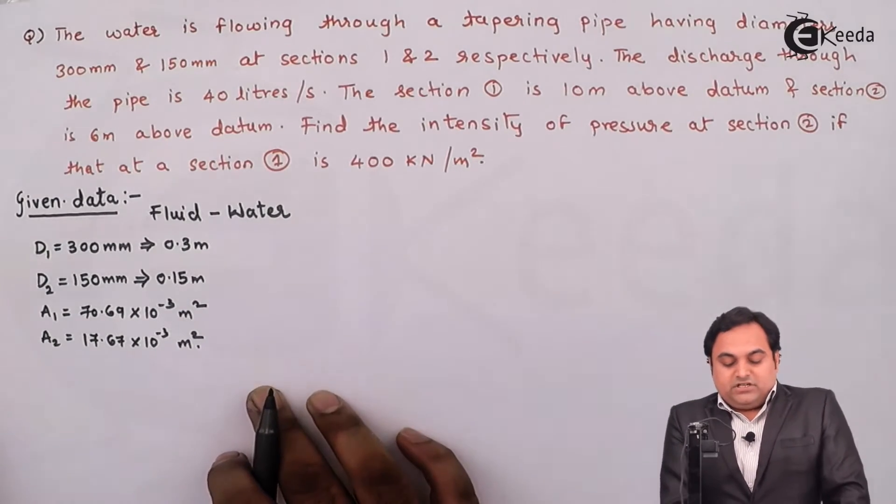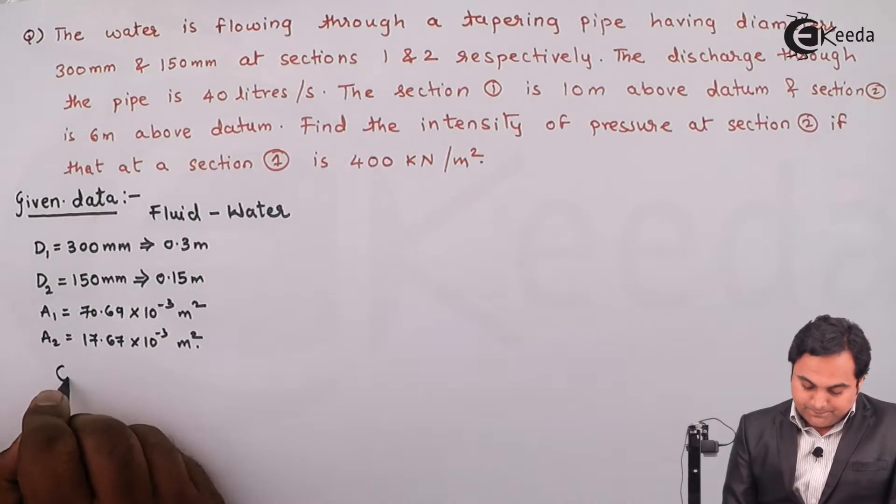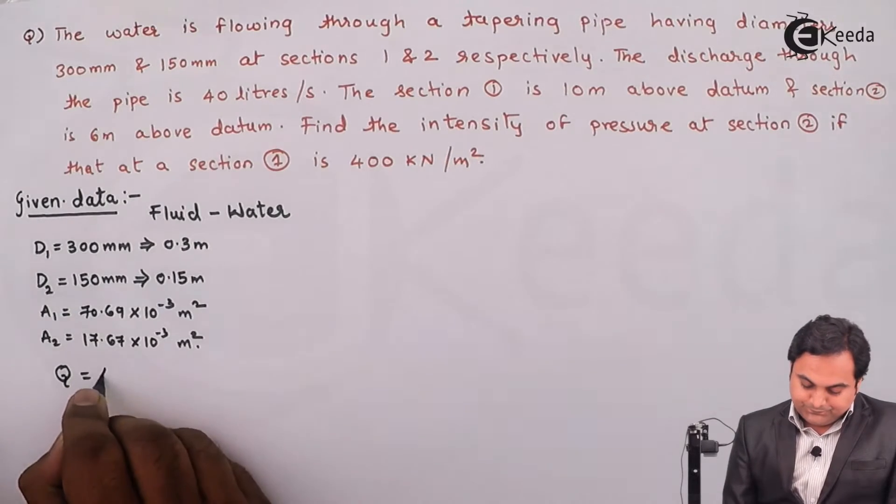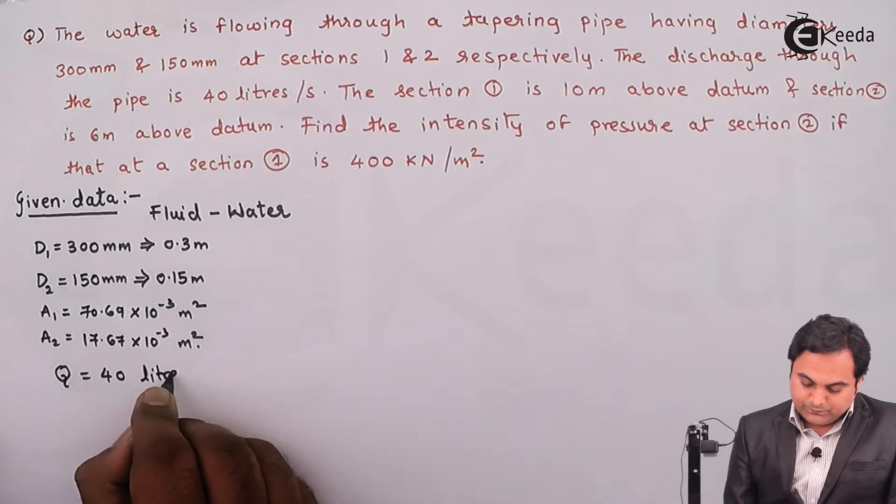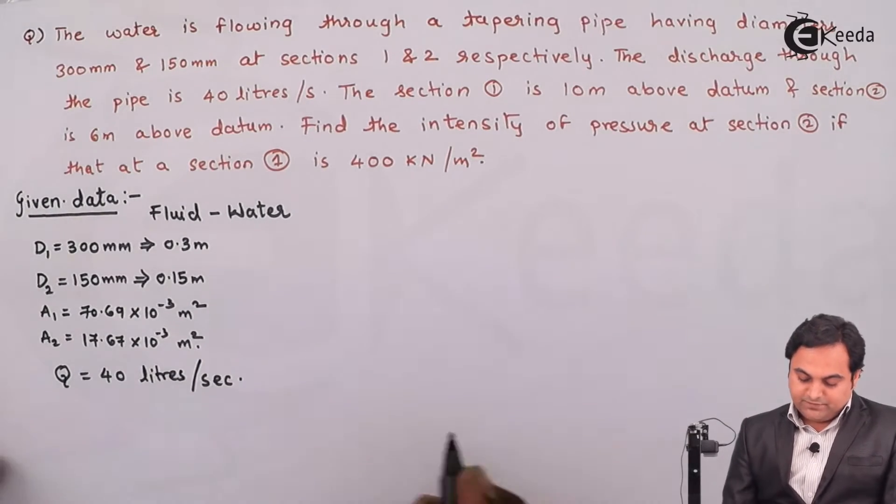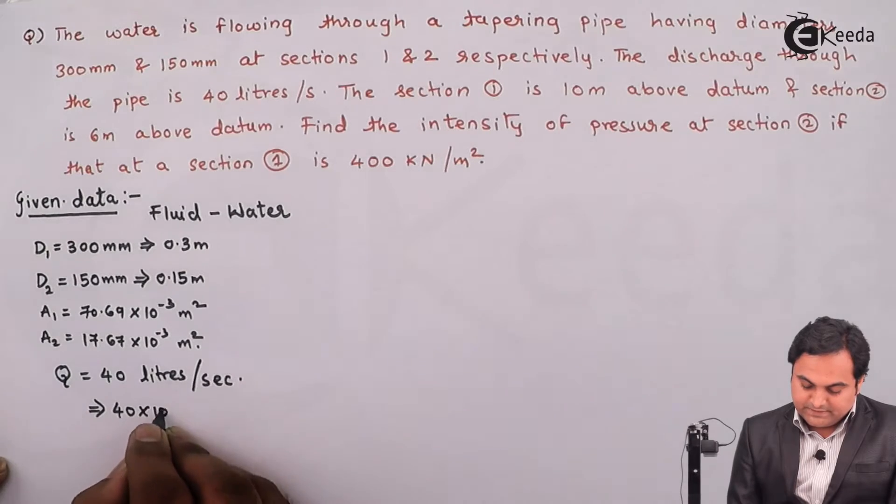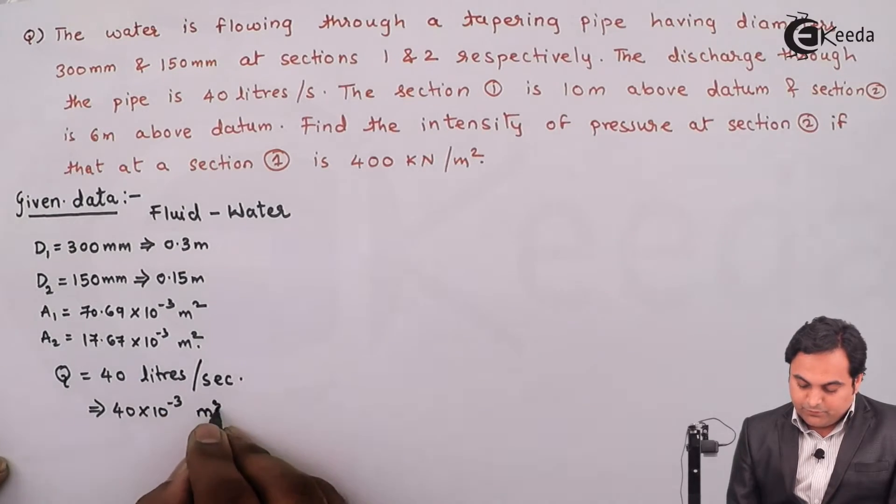Next, the discharge through the pipe is 40 liters per second, so Q is given 40 liters per second, that will be 40 into 10 raise to minus 3 meter cube per second.